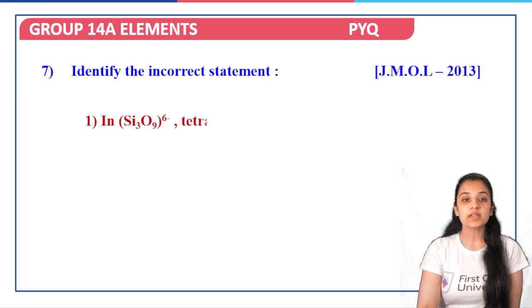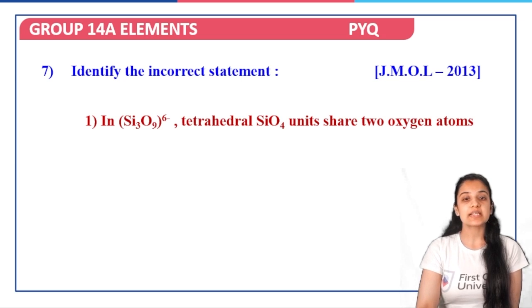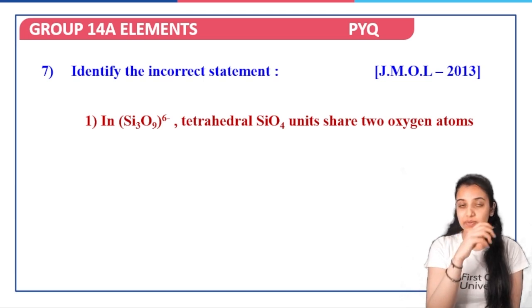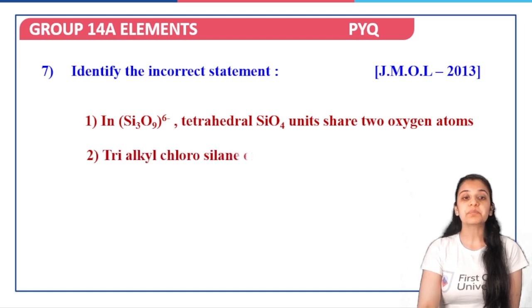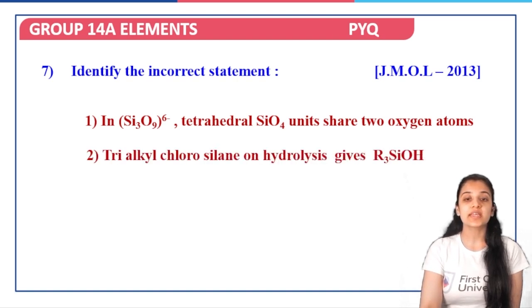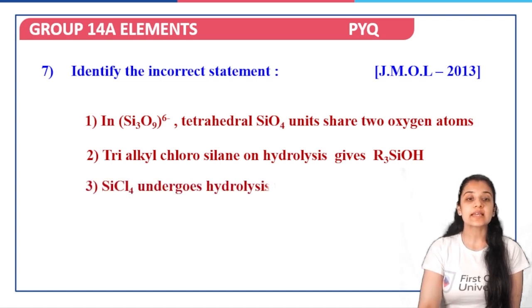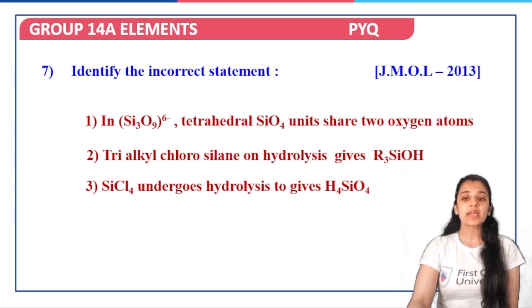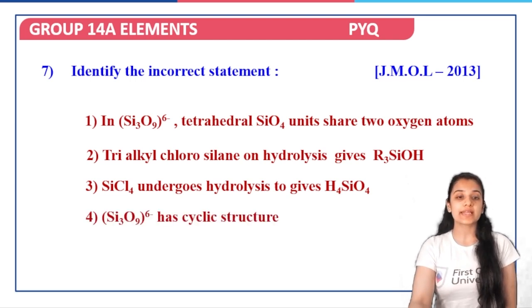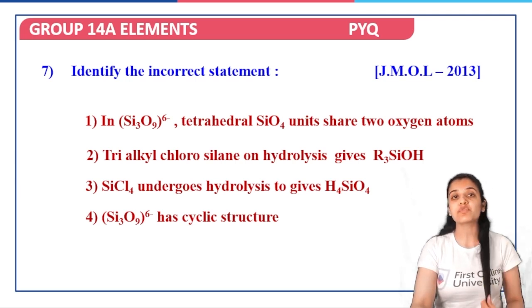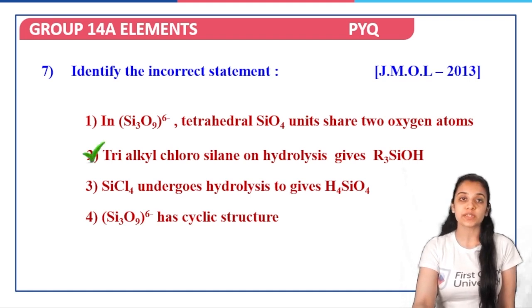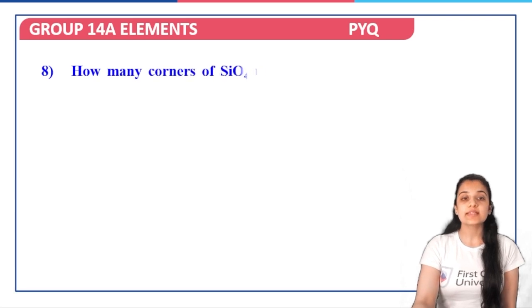Next: identify the incorrect statement. In Si3O9(6−), tetrahedral SiO4 units share two oxygen atoms — two oxygen atoms being shared means we are not talking about pyrosilicates. Trialkyl chlorosilane on hydrolysis gives R3SiOH. SiCl4 undergoes hydrolysis to give H4SiO4. Si3O9(6−) has a cyclic structure. The incorrect statement is option two: trialkyl chlorosilane on hydrolysis will not yield R3SiOH.